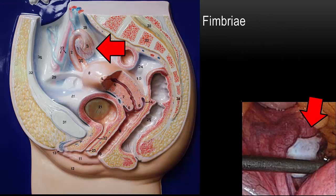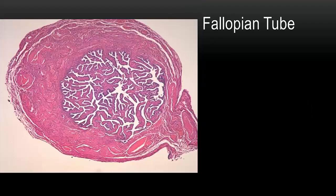Let's take another look at the fimbria at the end of the fallopian tube. Here we see the fimbria on the left in the model and on the right in the female pelvis. The fimbria are highly folded. If we take a look at the histology of the fallopian tube, we can see the highly folded structure of the fallopian tube.